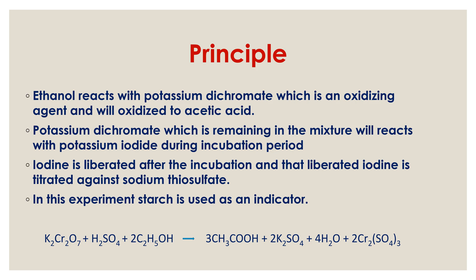First, ethanol reacts with potassium dichromate, which is an acid oxidizing agent, and gets oxidized to acetic acid. This is the first step. Then the potassium dichromate remaining in the mixture reacts with potassium iodide during the incubation period. After the incubation period, iodine is liberated. This iodine is then titrated against sodium thiosulphate.